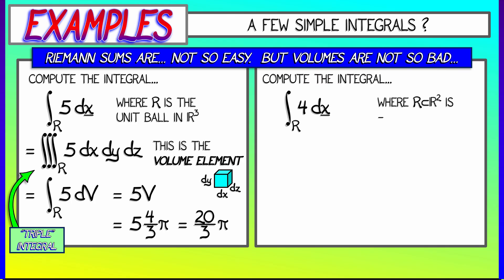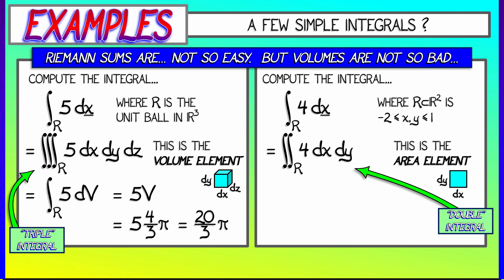We could do the same thing in R² with area. Consider the integral of the function 4 over the rectangular region in the plane where the x and y coordinates vary between -2 and 1. This is expressible as a double integral with respect to the area element dx dy, an infinitesimal rectangle with dimensions dx and dy. That is the area element. I could also write that as dA.